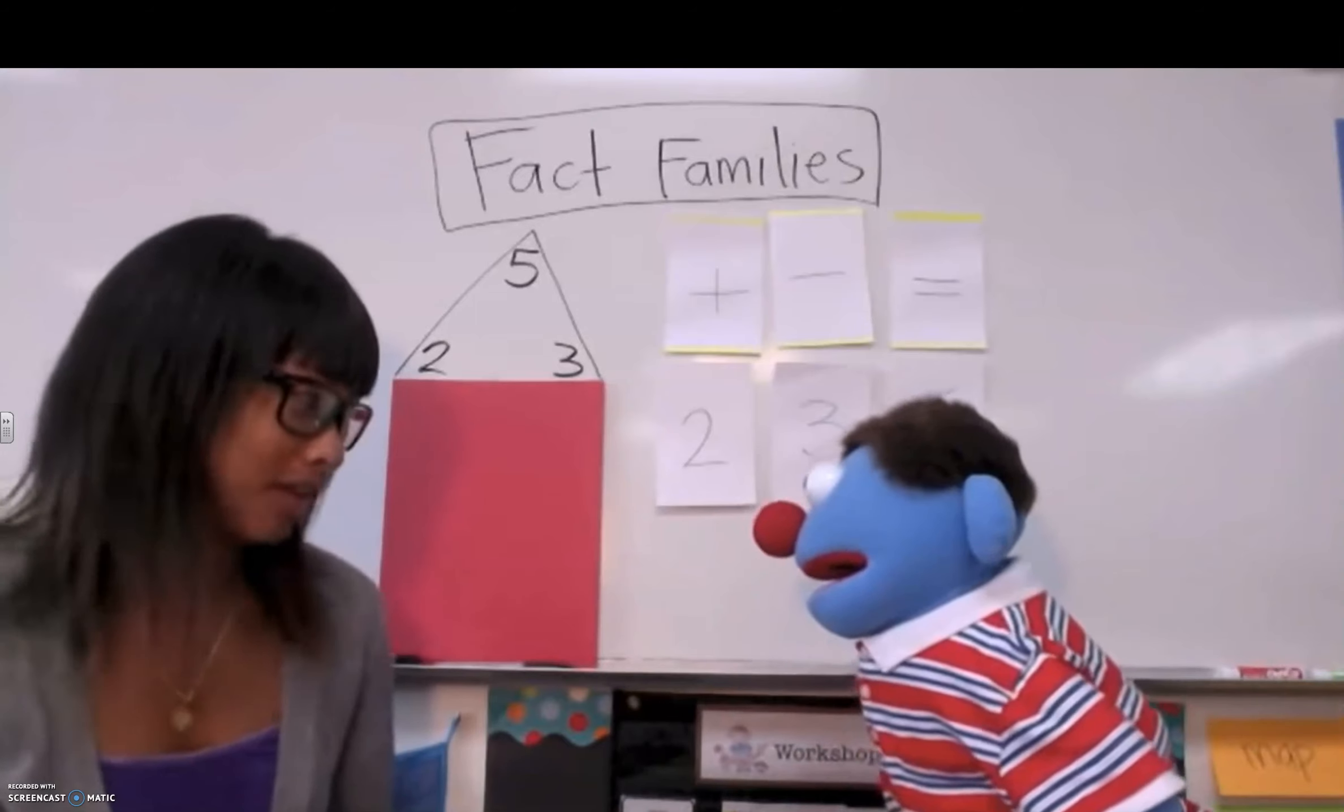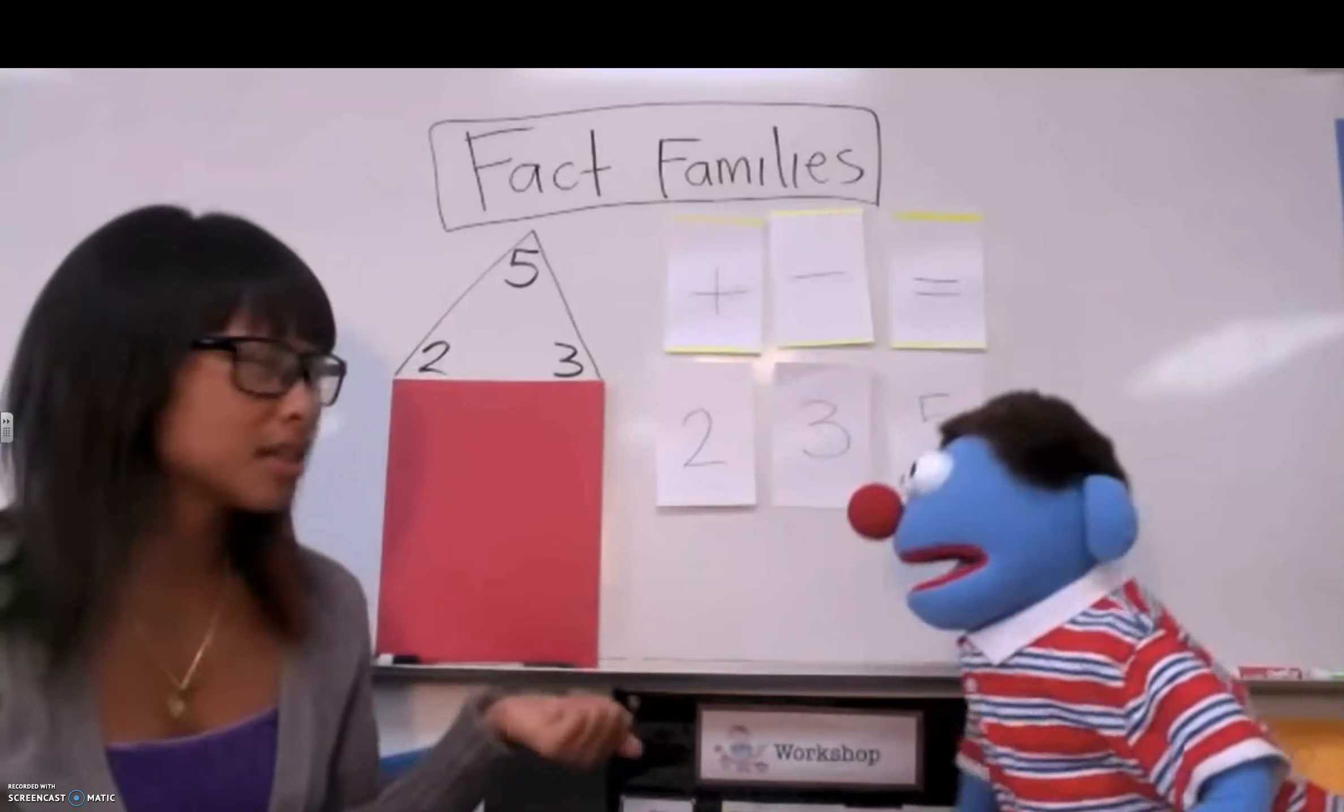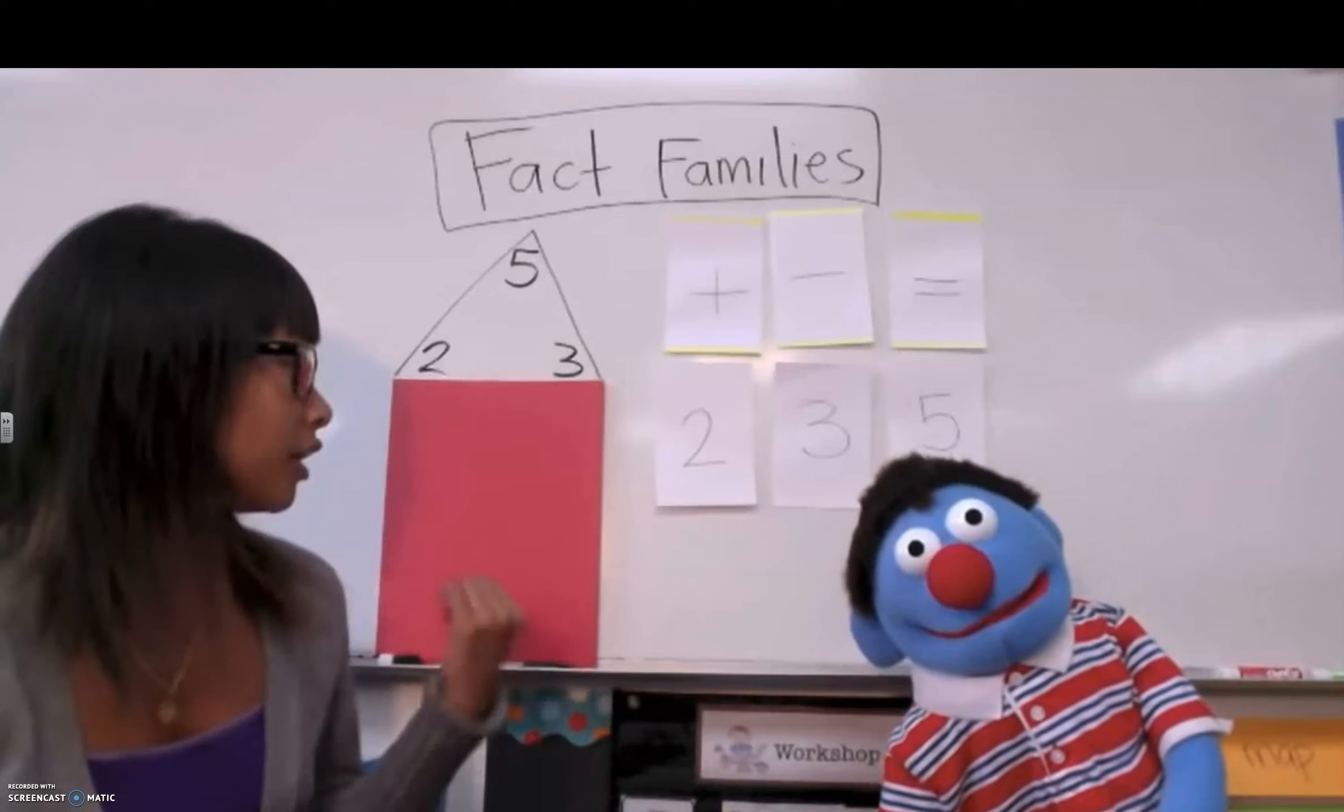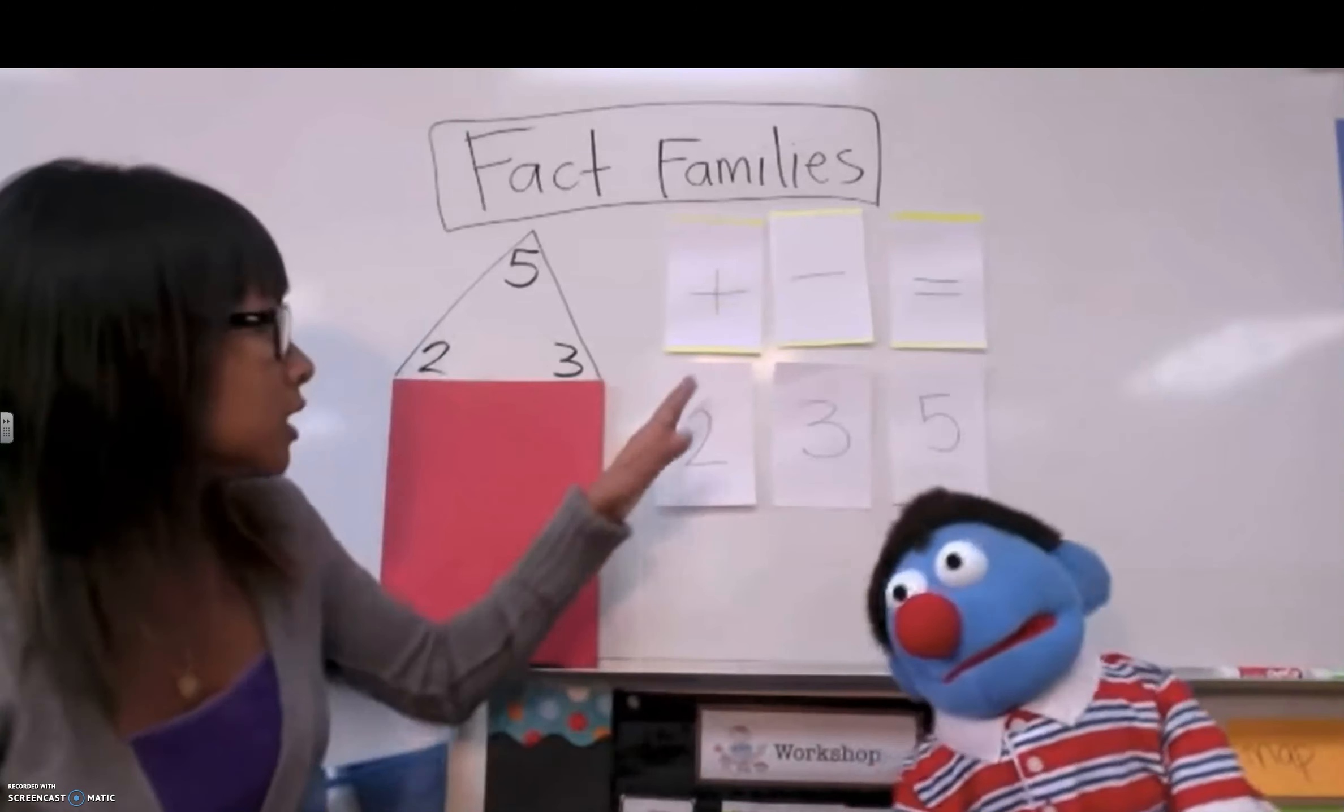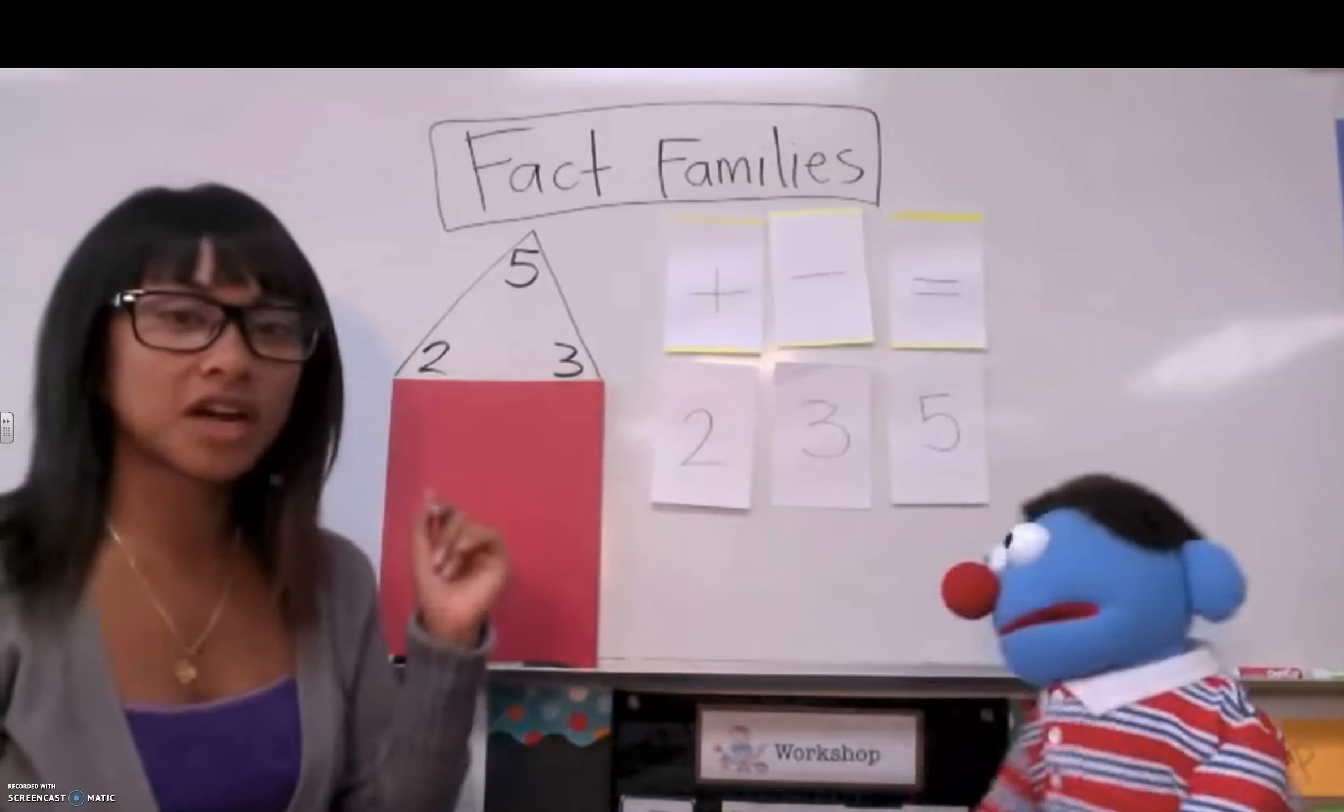What's a fact family house? Well, a fact family are three numbers that are like a family and they all go in the house. And somehow I have to add them and subtract them and they'll go in this house. Do you want to see how it works? Yeah. Okay, so say I have the numbers two, three, and five. That's my fact family.